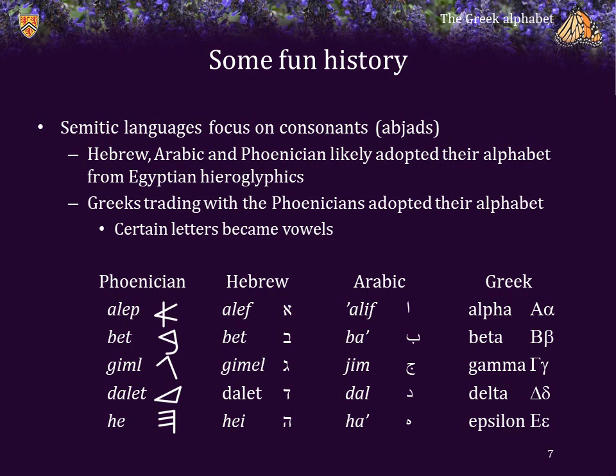Now, the Phoenicians were great traders — Carthage, for example, was a Phoenician colony. The Greeks, trading with the Phoenicians, likely adopted their alphabet. However, there were certain letters that were not used by the Greeks, and so instead of discarding them, they repurposed them to represent vowels.